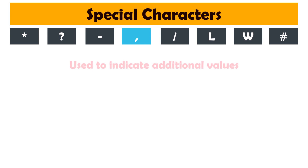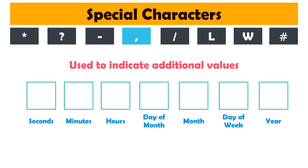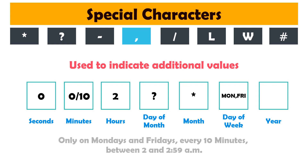Comma is used to indicate additional values. For example, if we only want to trigger the bot on Mondays and Fridays, then we fill in the day of the week field with 'MON,FRI'. So the bot is only triggered on Mondays and Fridays.